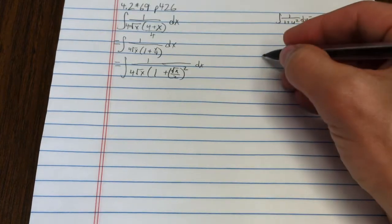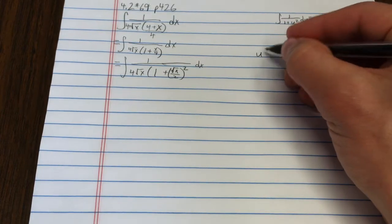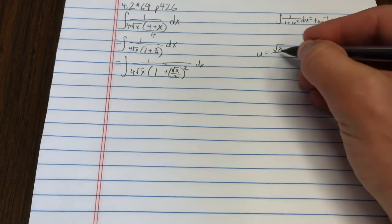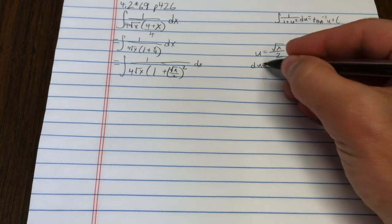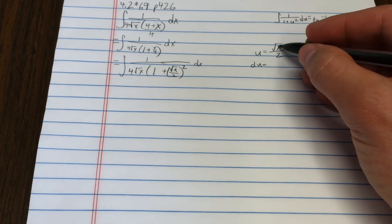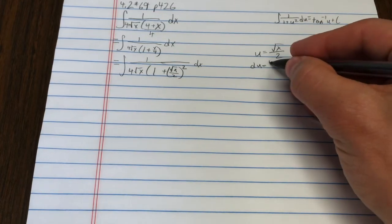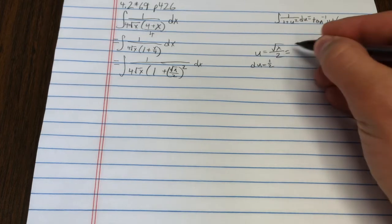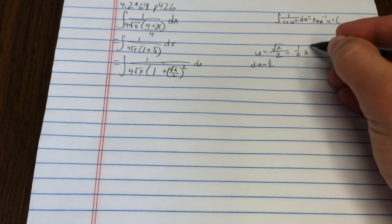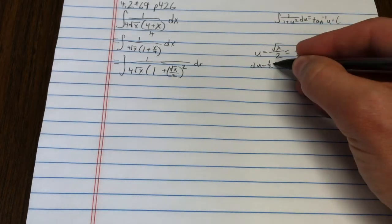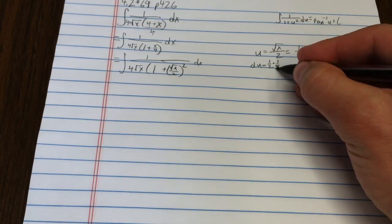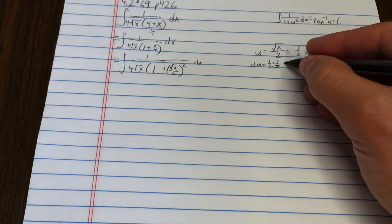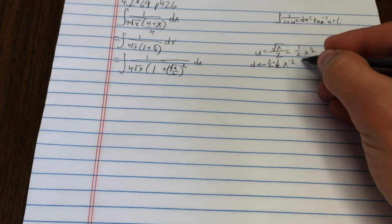That would make a decent choice for u be square root of x over 2. Du would then be, let's see what we have here, I'll just pull out that 1 half. I'm thinking about this as being 1 half x to the 1 half, so then times 1 half x to the negative 1 half dx.